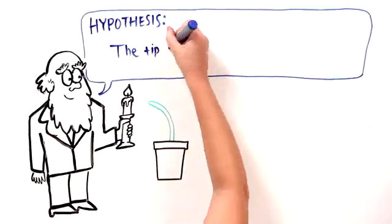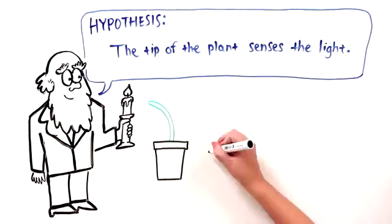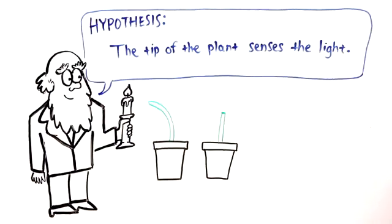So what experiments could he do in order to test his hypothesis? Here's his observation, that when he puts lateral light from the side, the plant, in this case the seedling, bends towards it. His hypothesis was it's the tip of the plant. So the first thing he did was he chopped off the tip. And as you can see here, the plant lost the ability to bend towards the light.